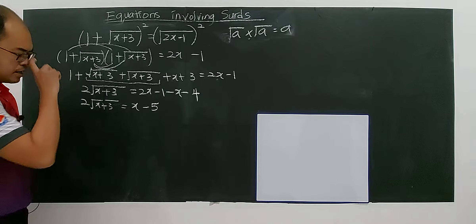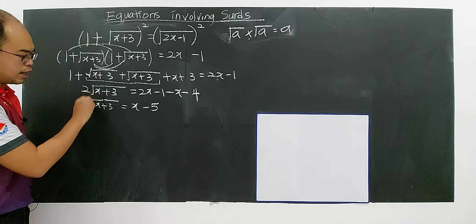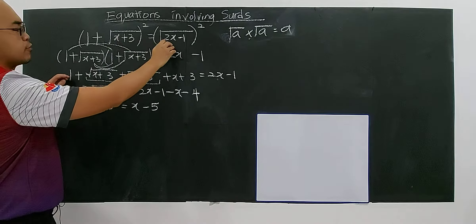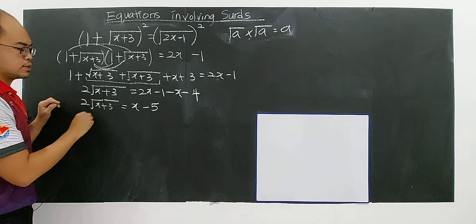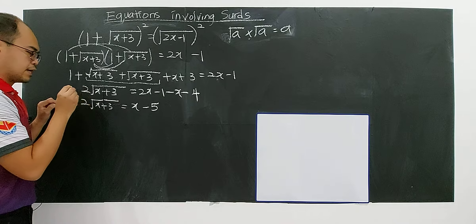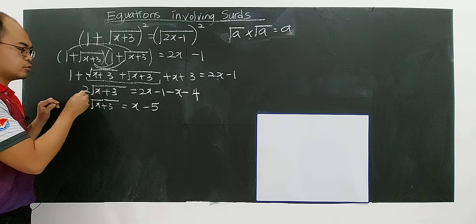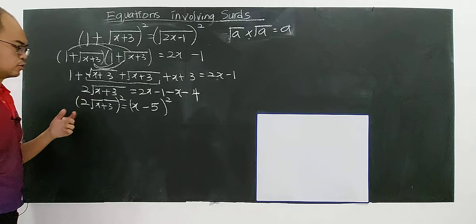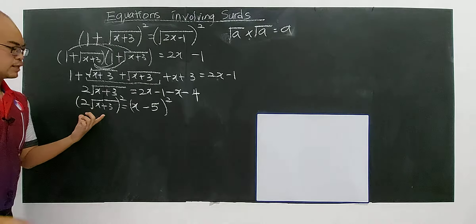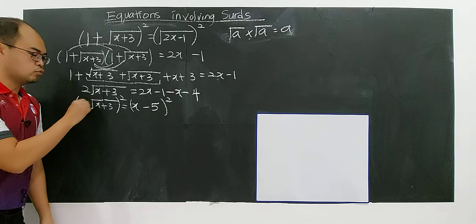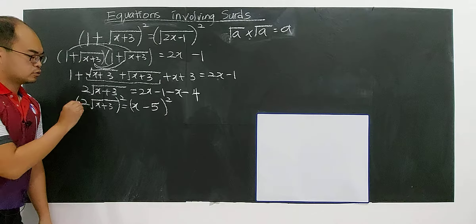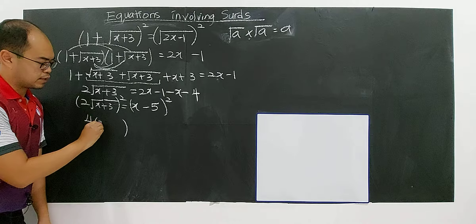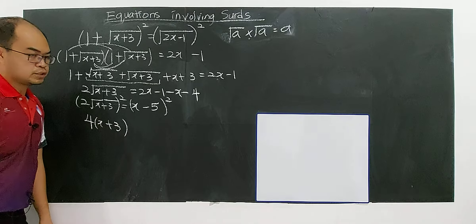Now you still have one surd remaining, so you square both sides again until the surd is gone. Squaring gives 4 times bracket x plus 3, and on the right side you expand x minus 5 squared to get x squared minus 10x plus 25.